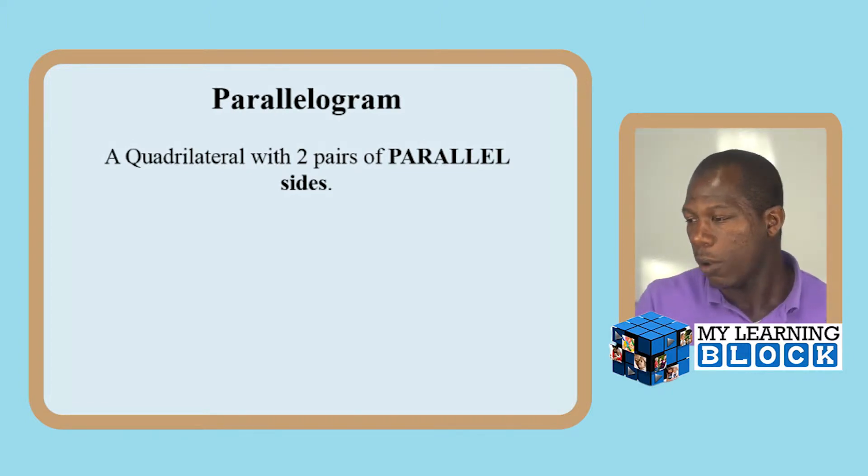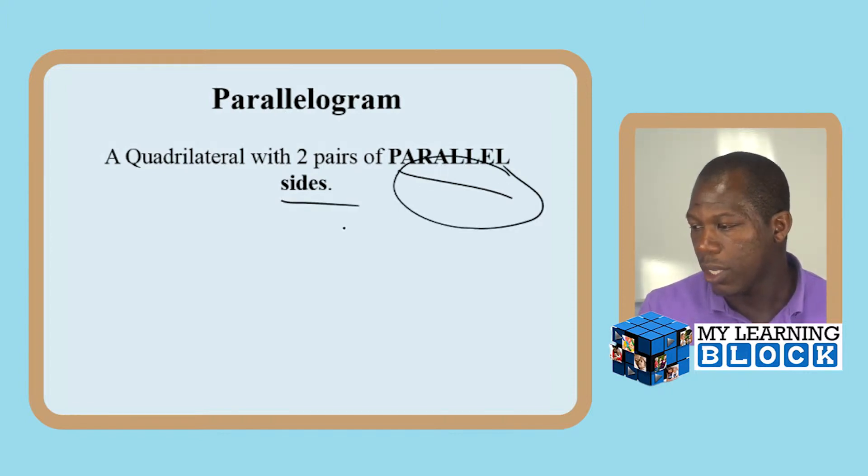So a parallelogram is a quadrilateral with two pairs of parallel sides. It has two pairs of parallel lines.